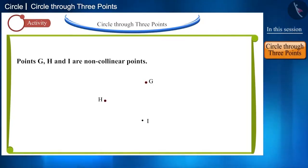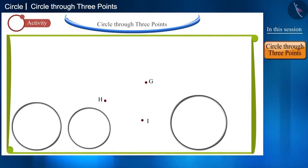Now we will try to place the rings on G, H, and I. Is there a ring that will pass through all these three points? Let's see.